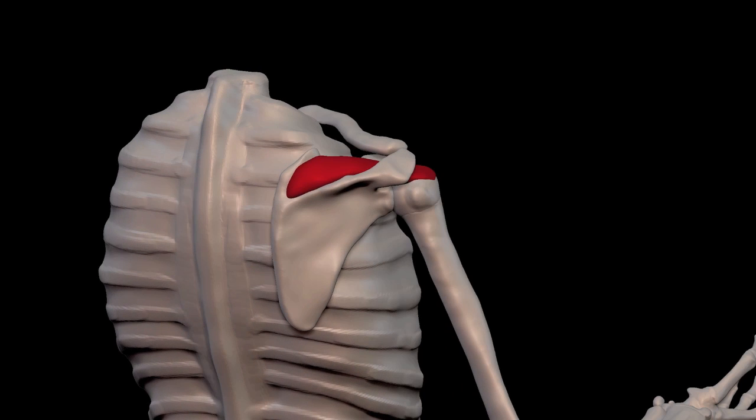The supraspinatus muscle rises from this concave part of the scapula called the supraspinatus fossa and it goes to the greater tubercle of the humerus. So these are the two attachments of this muscle.